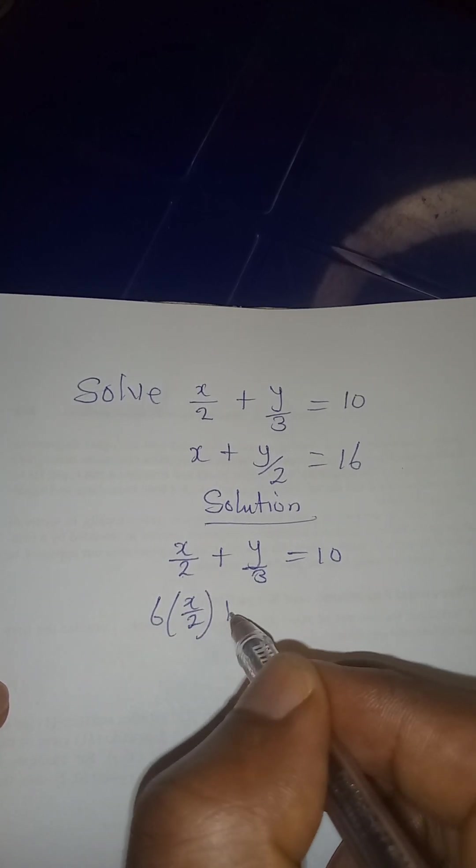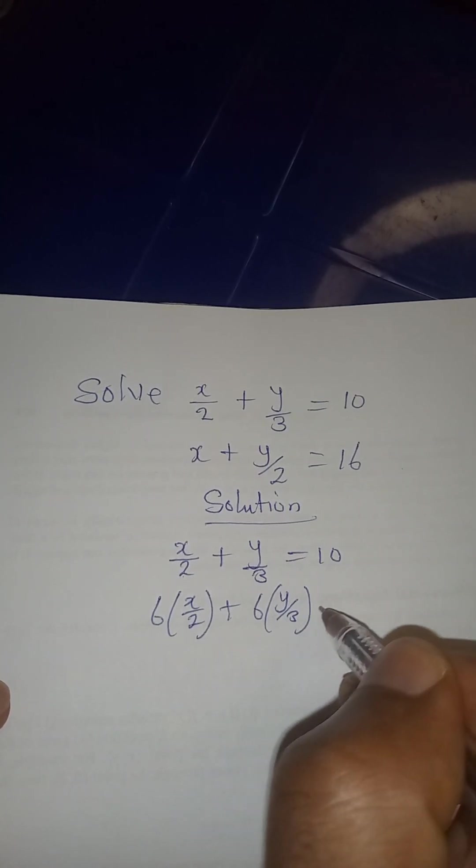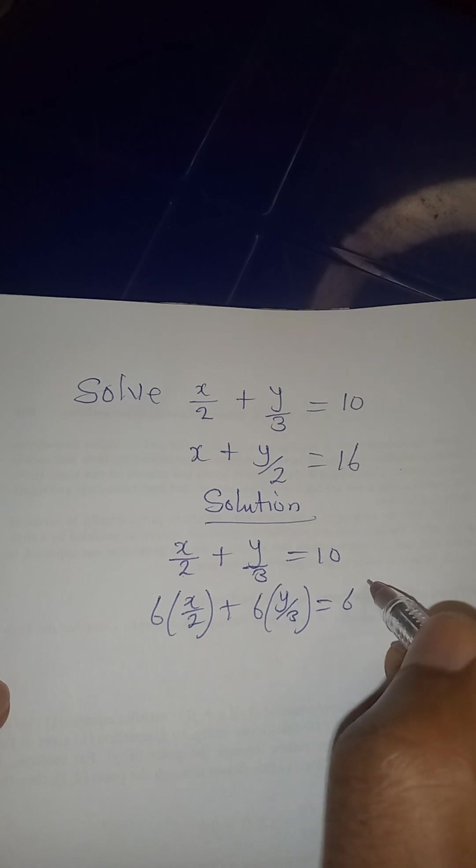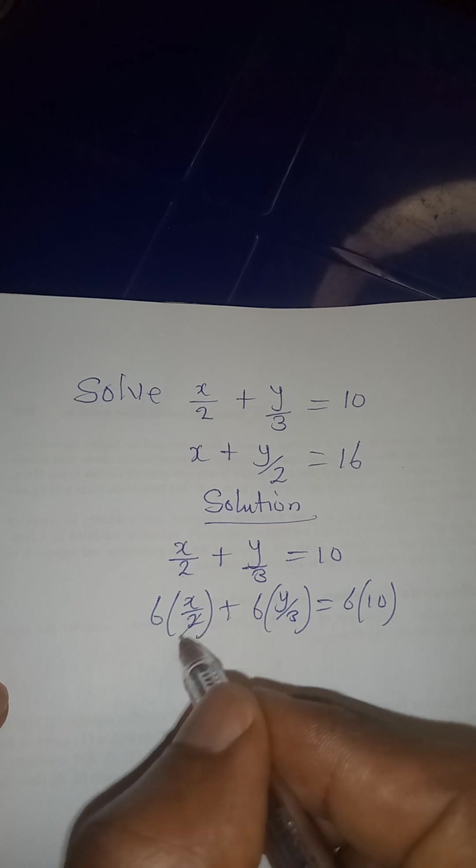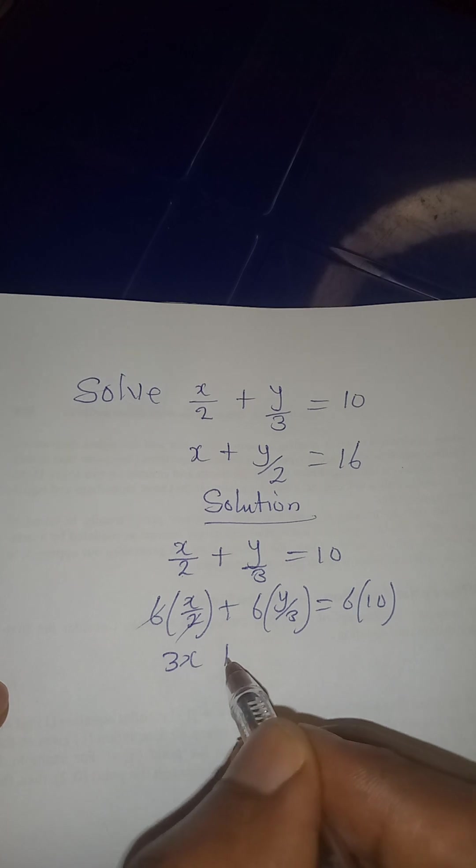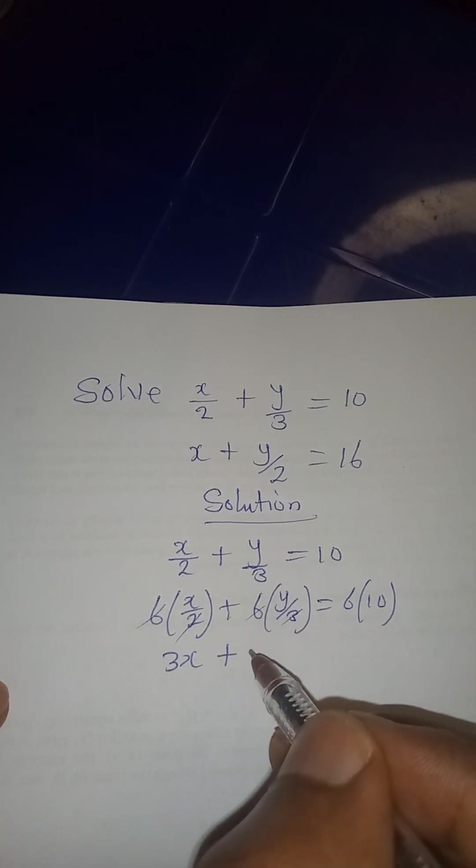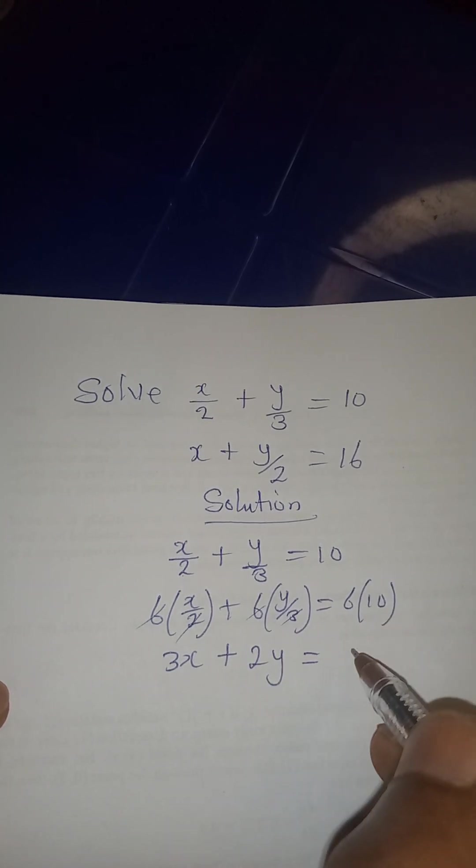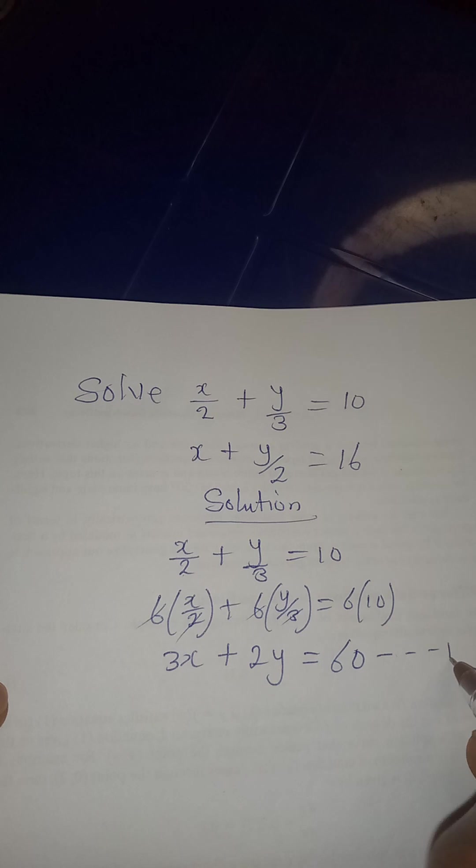We are going to have 6 multiplied by x over 2, then plus 6 multiplied by y over 3, and it's equal to 6 multiplied by 10. Remember that the 6 is the LCM. So 2 into 6 will be 3, 3 times x will give us 3x, plus 3 into 6 is 2, 2 times y will be 2y, and this will be equal to 60, which is 6 times 10. Now let's call this our equation 1.